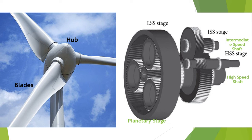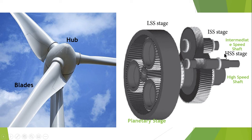The part hidden behind the blades usually consists of a gearbox. A typical gearbox in a wind turbine has three stages: the first one known as the planetary gearbox, which is coupled by two more gear stages — namely the intermediate and the high speed stages. The first, or planetary stage, is the low speed shaft stage.